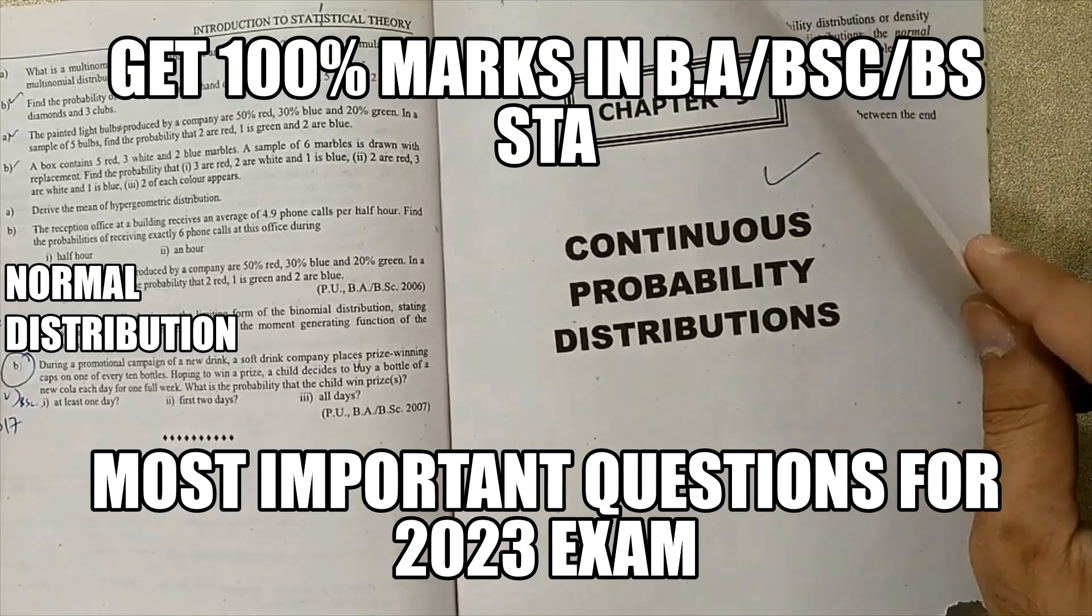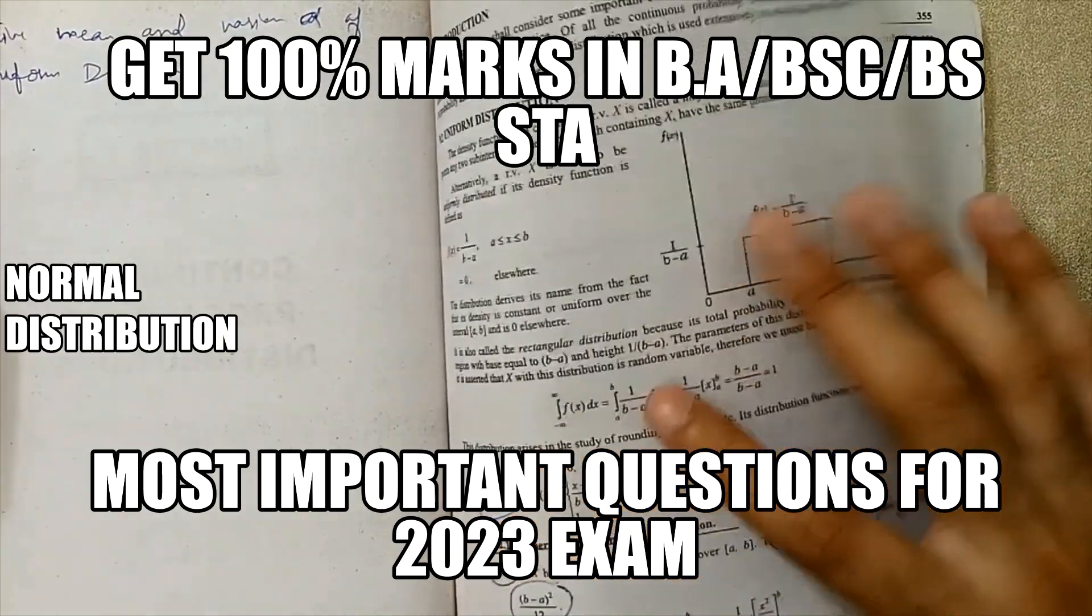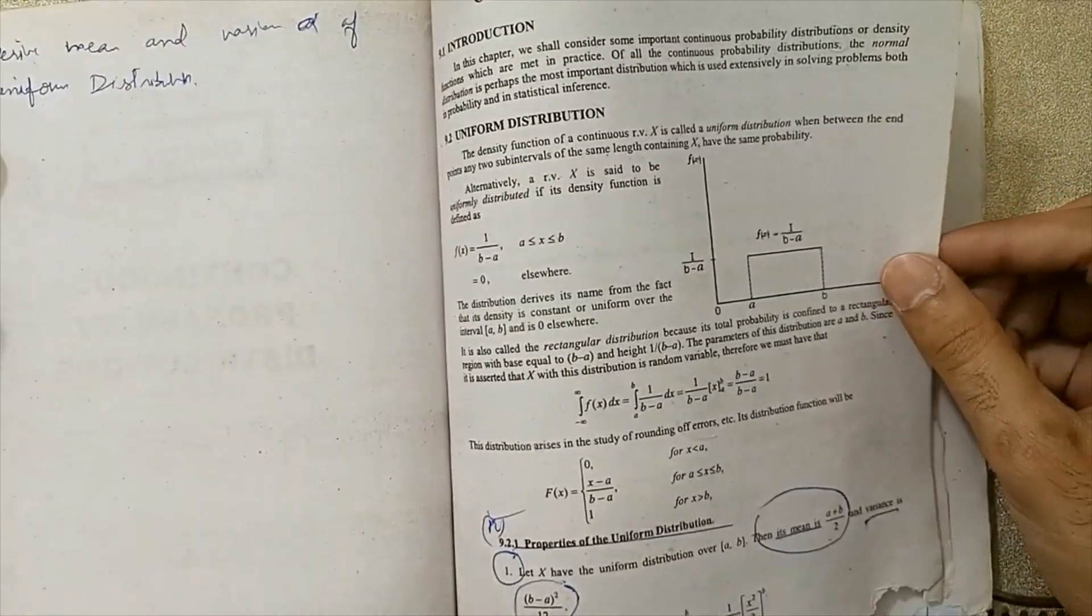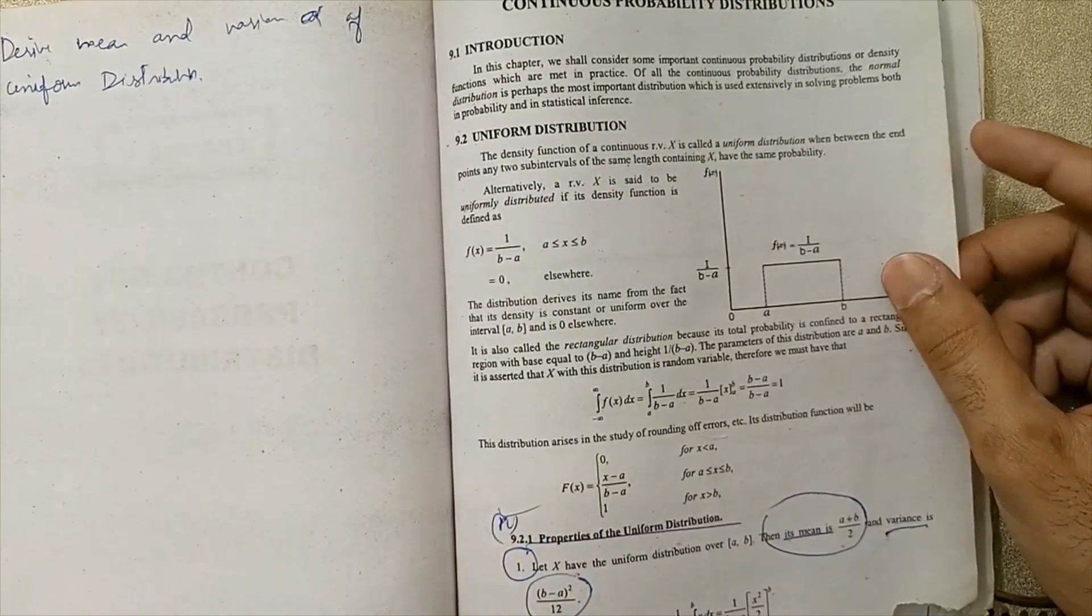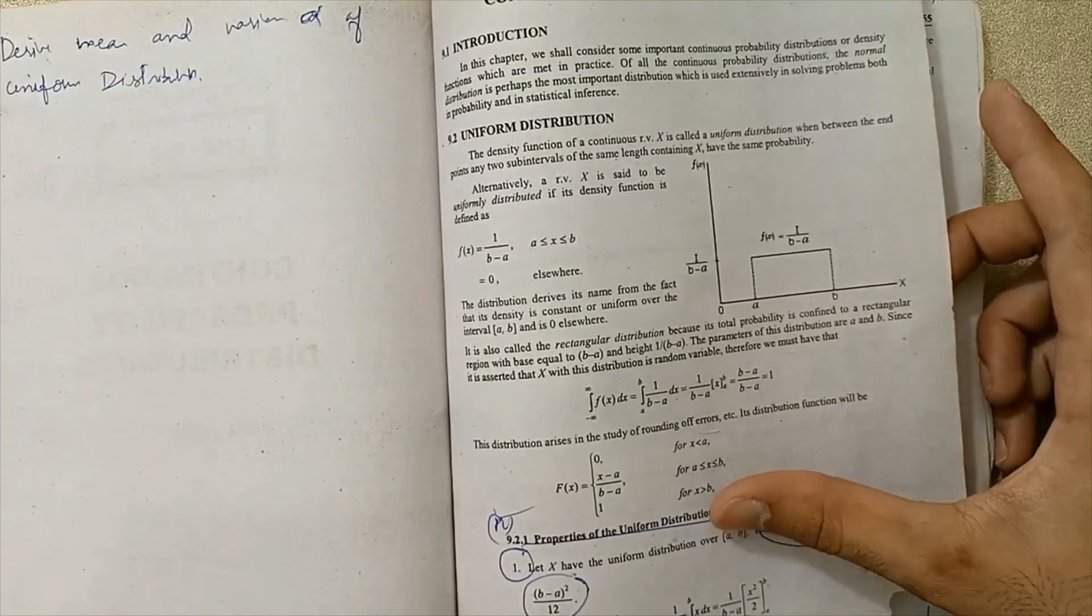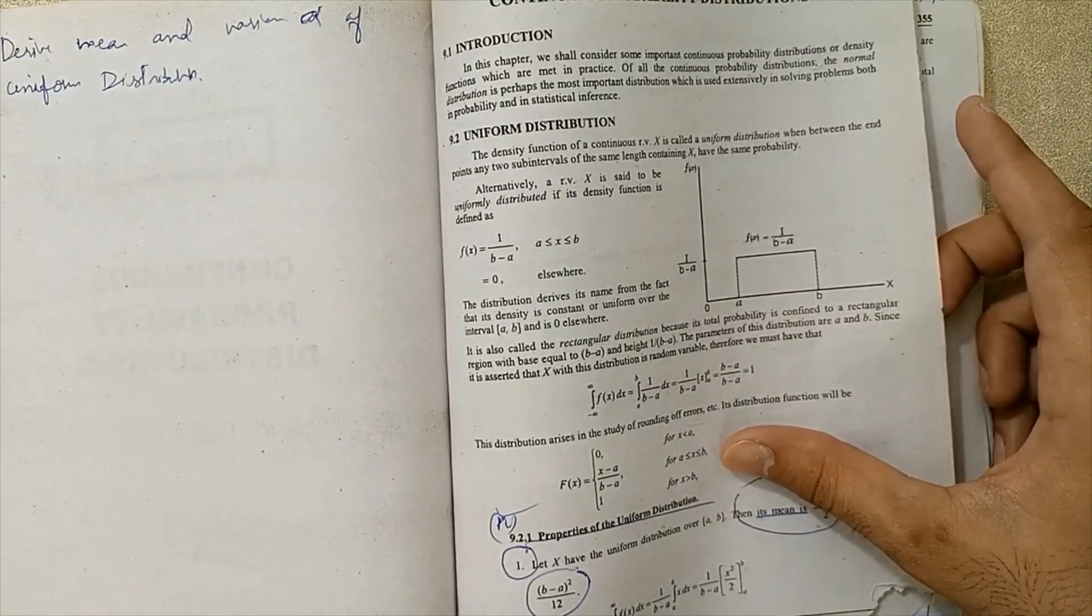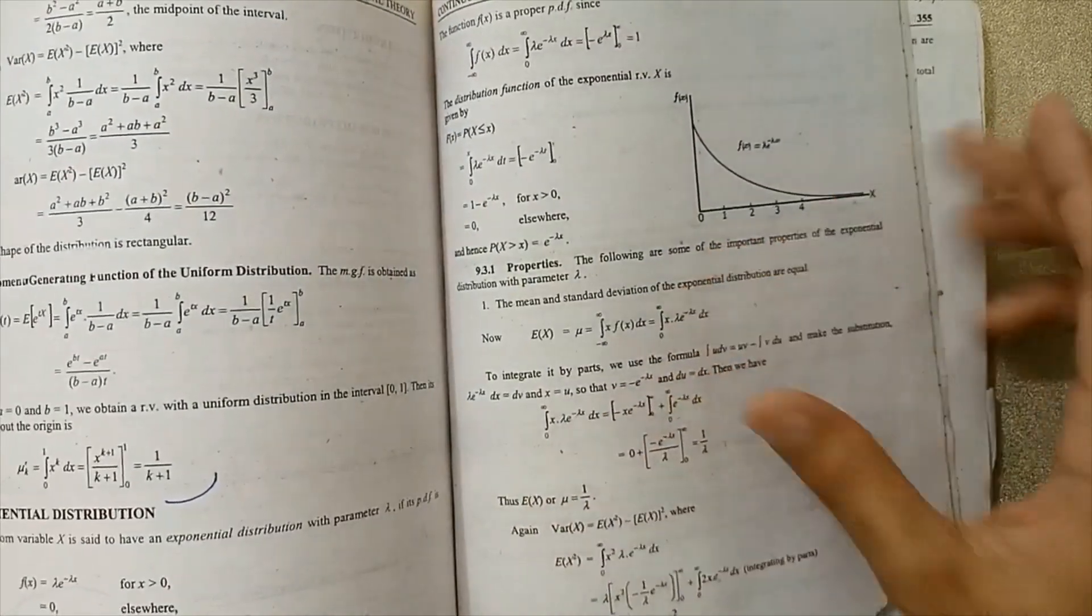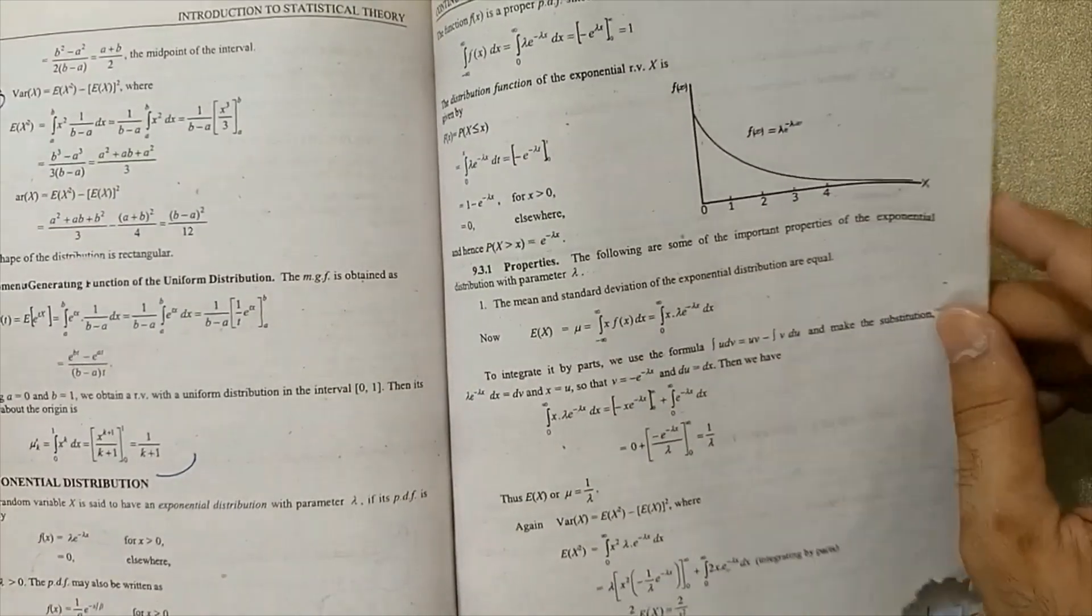I'm going to move to Chapter 9, continuous probability distributions. This topic is very important. Deriving mean and variance of uniform distribution is a very important topic. The continuous value distribution properties - what is uniform distribution, what are the properties of uniform distribution - are very important for exams, and also to prove the mean and variance. Next, the moment generating function, this topic is very important.